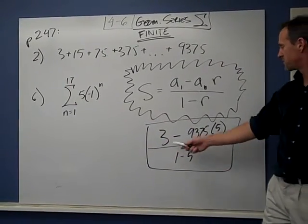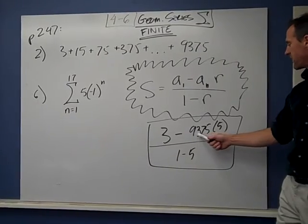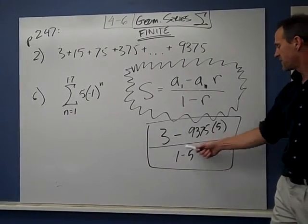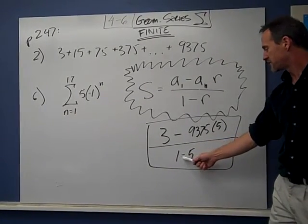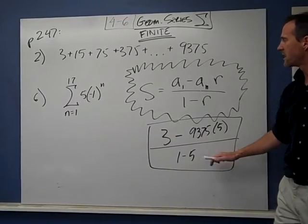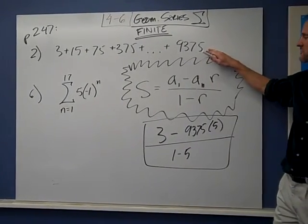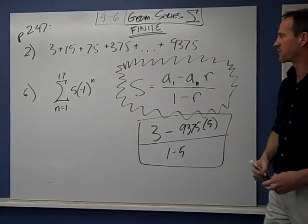Hit the calculator. Crunch the numbers. 3 minus 9,375 times 5 divided by, in this case, that's going to be negative 4. And you'll see what the solution is. That's problem number 2. So bring in that solution for homework tomorrow.